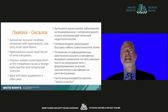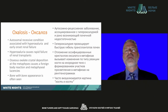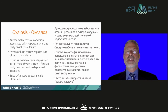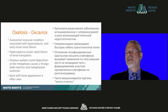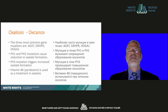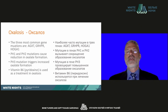The last entity is oxalosis, an autosomal recessive condition associated with hyperoxaluria and early-onset renal failure. Hyperoxaluria causes rapid failure of renal transplants. Osseous oxalate crystal deposition at the metaphysis causes a foreign body reaction and metaphyseal lucencies, which are classic radiographic appearances, and a bone-within-bone appearance is often seen. The three most common gene mutations are AGXT, GRHPR, and HOGA1. PH1 and PH2 mutations cause reduction in oxalate formation; PH3 mutation triggers increased oxalate production. Vitamin B6 (pyridoxine) is used as a treatment for oxalosis.